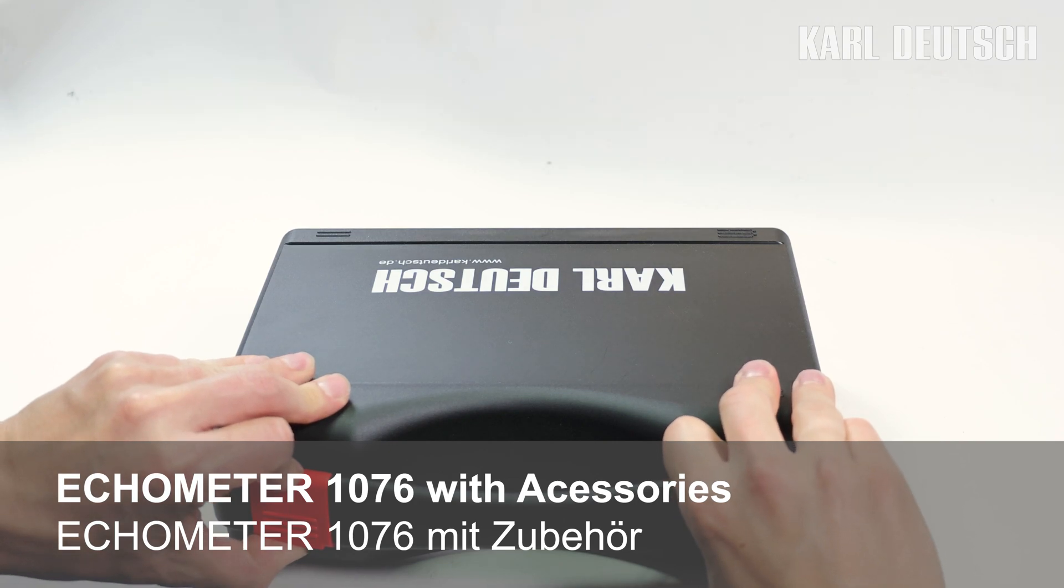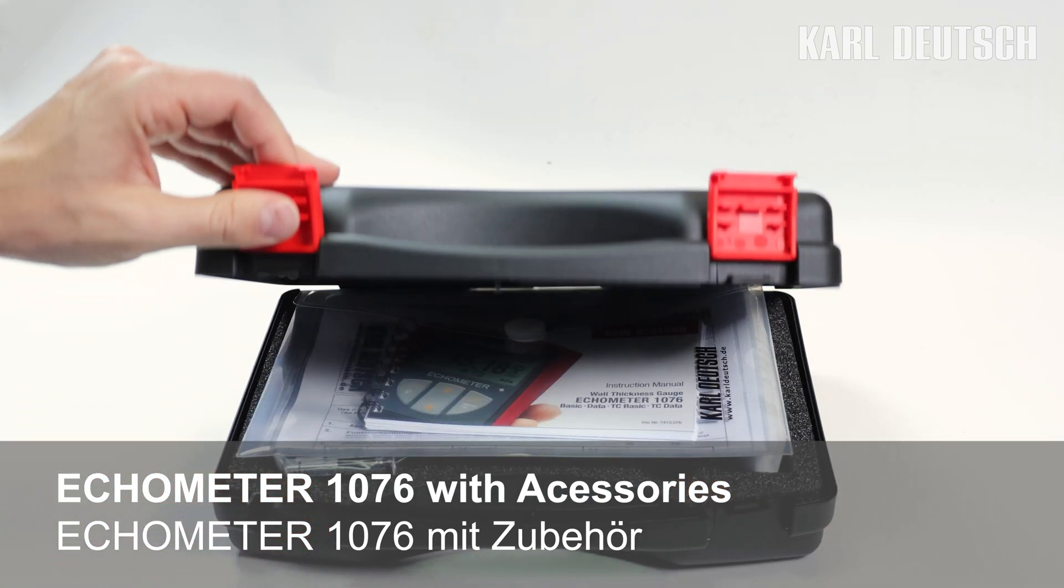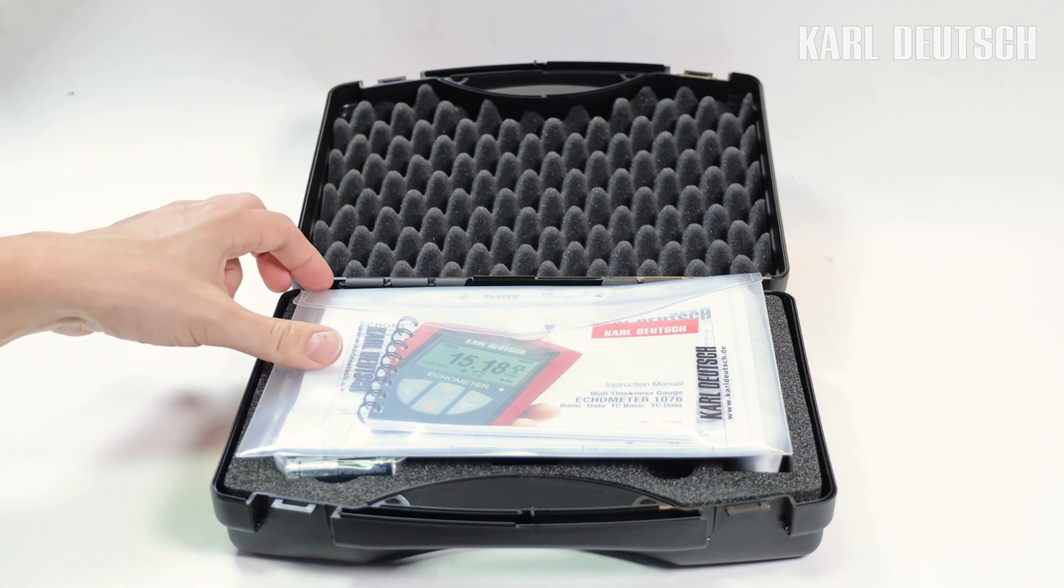The ECHOMETER 1076 comes in the original case with enough space for the instrument as well as all accessories and documents.